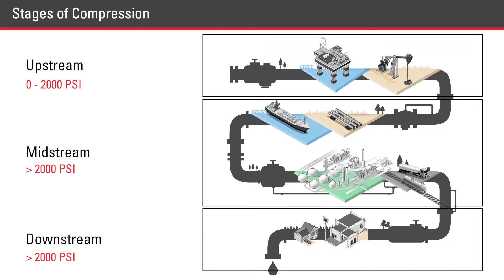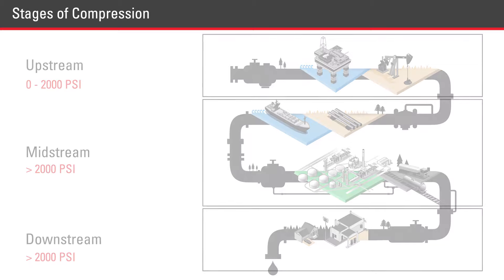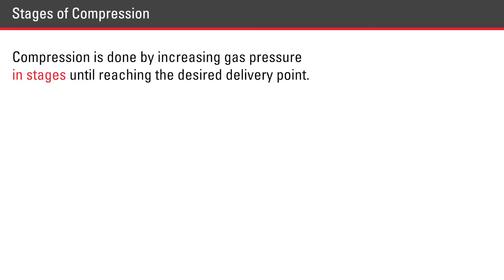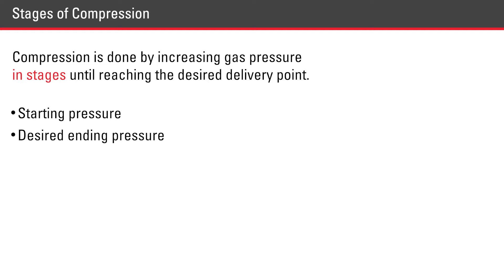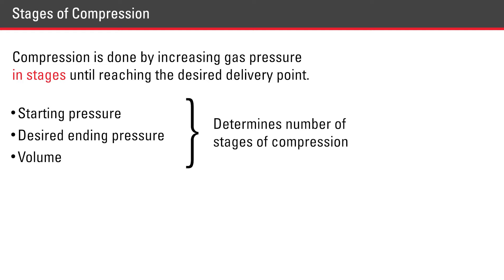Gas is compressed from 0 to 2,000 PSI in the upstream sector. Midstream and downstream can compress in excess of 2,000 PSI. Compression is done by increasing gas pressure in stages until reaching the desired delivery point. The starting pressure, desired ending pressure, and the volume will help determine how many stages a compressor will have.